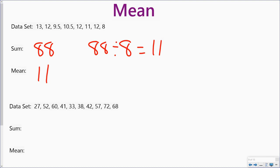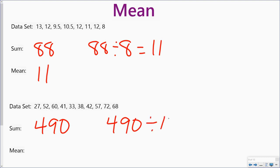In this next data set, I'm going to add up all of the numbers. When I add them up, I get a total of 490. There are 10 numbers in my data set, so I'm going to take 490 divided by 10. That gets me 49, and so my mean for this data is 49.